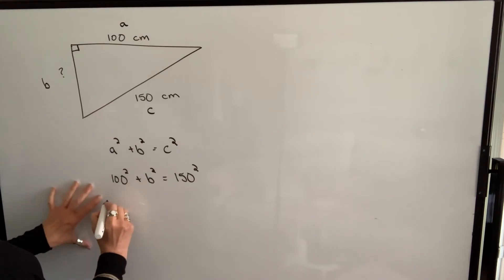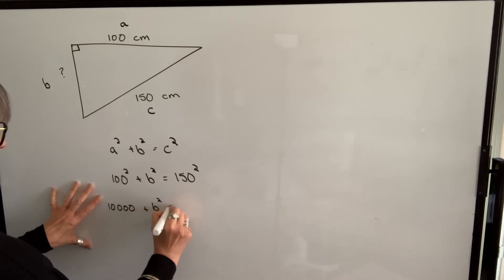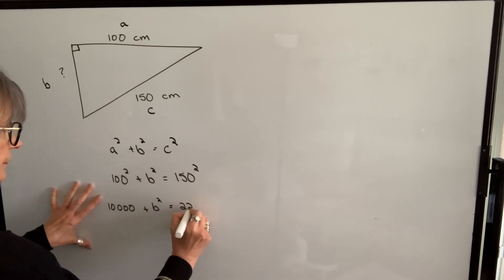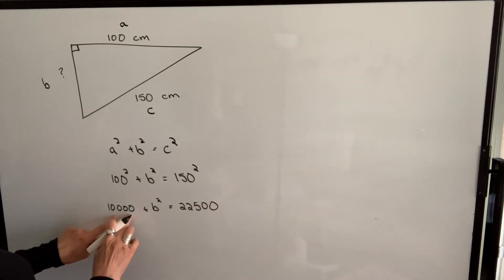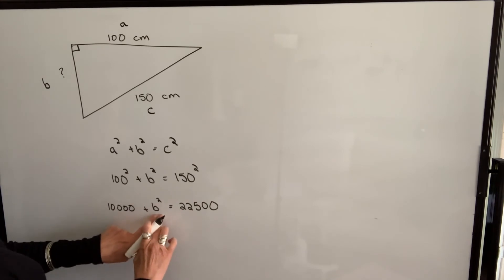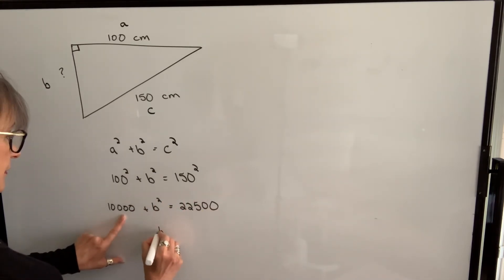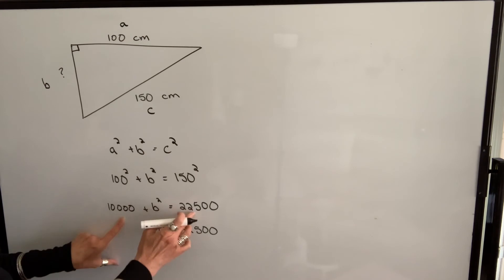So we can multiply these out. 150 squared. So we'll have 10,000 plus b squared equals 22,500. We want to solve for b squared, so we're going to subtract 10,000 from this side. And whatever we do to this side of the equation, we have to do the same thing to the other side. So b squared will be equal to 12,500. I just subtracted 10,000 from both sides.